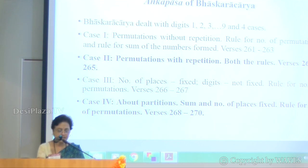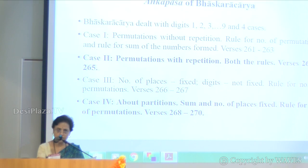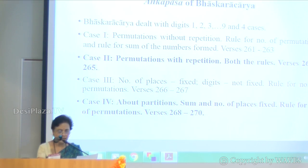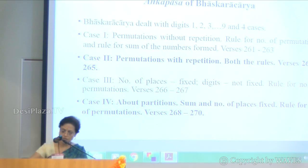Case 2 deals with permutations with repetition, and for this he again gave both rules. In Case 3 he gave the rule for number of permutations only. Case 4 deals with partitions: the sum and the number of places are fixed, and he gave only one rule — for the number of permutations.